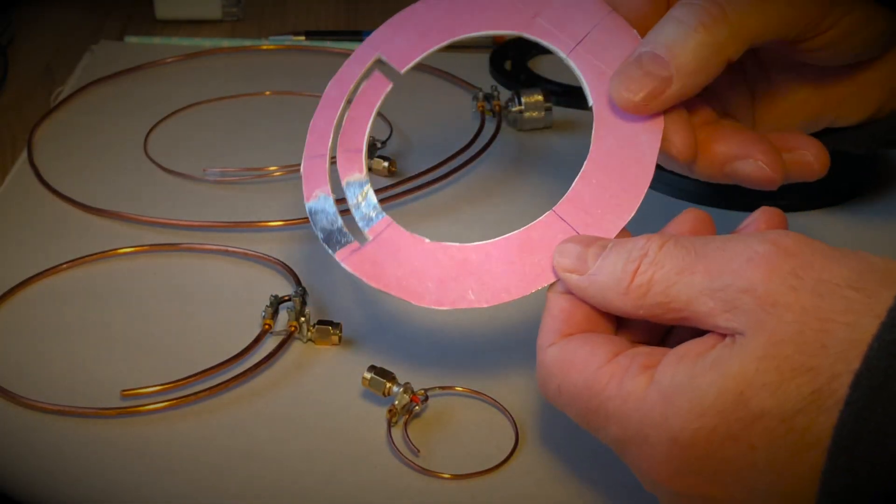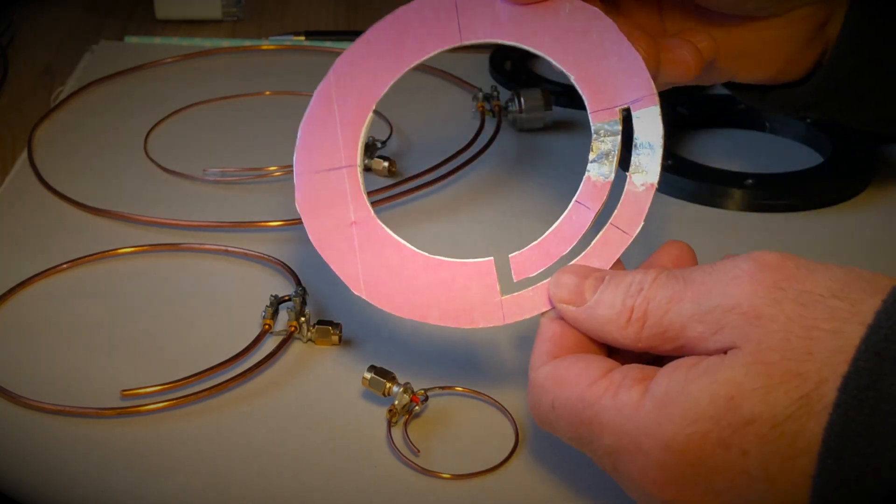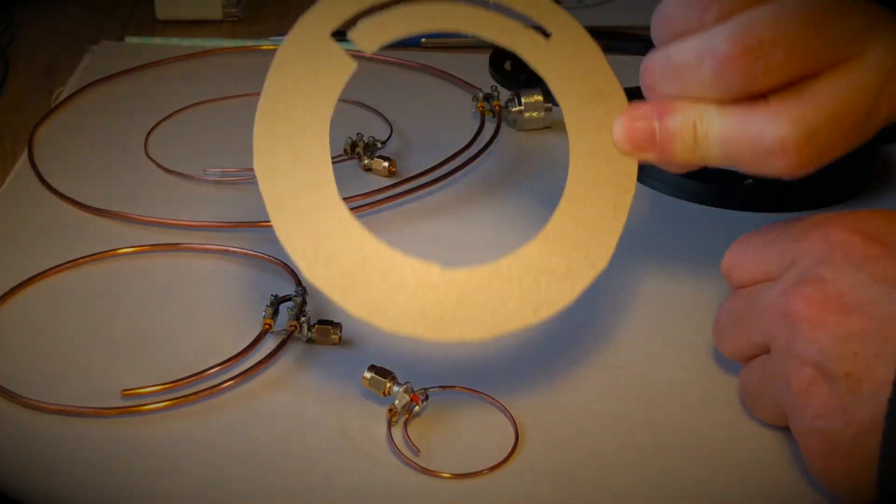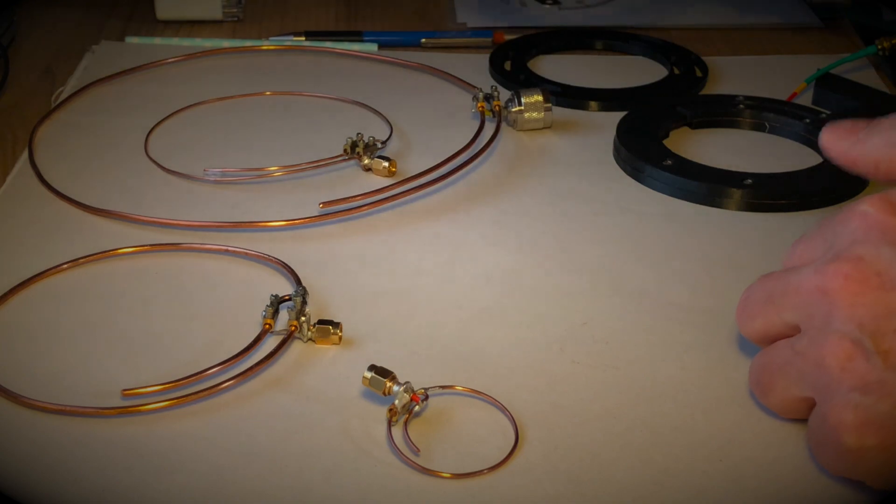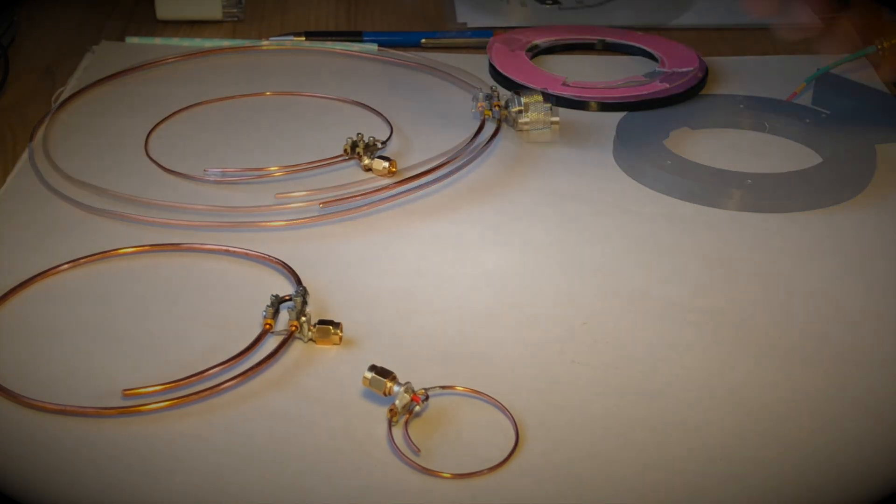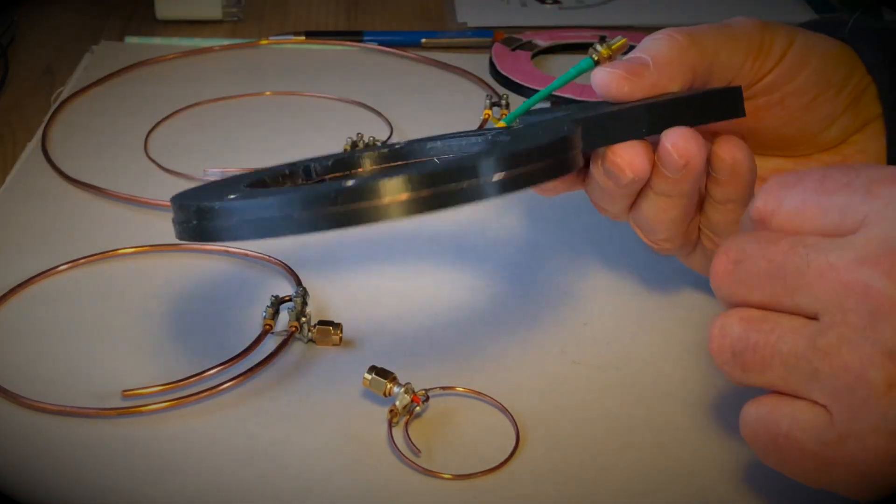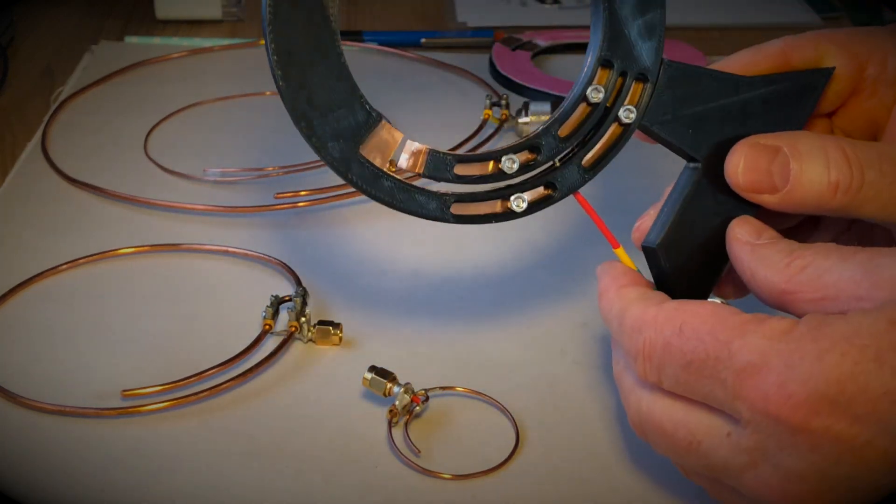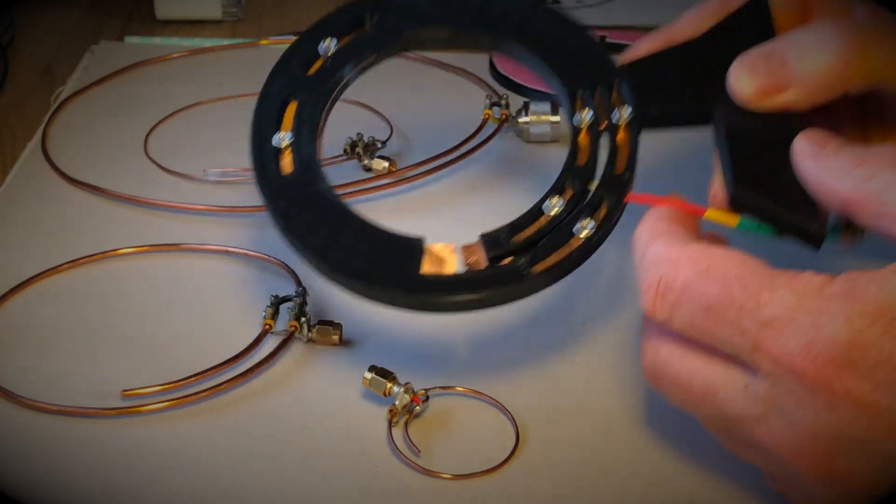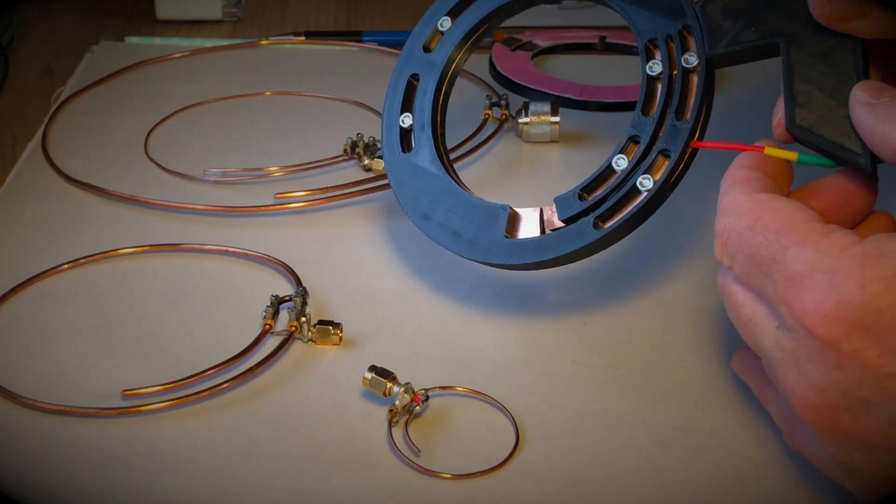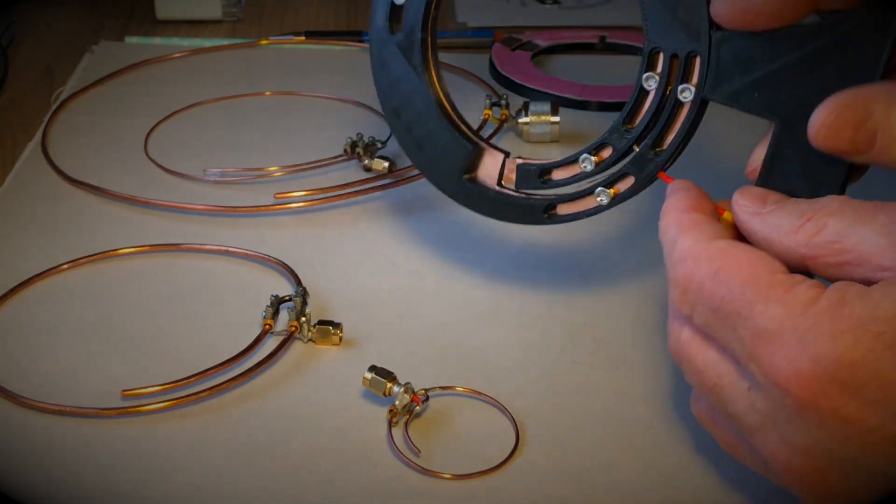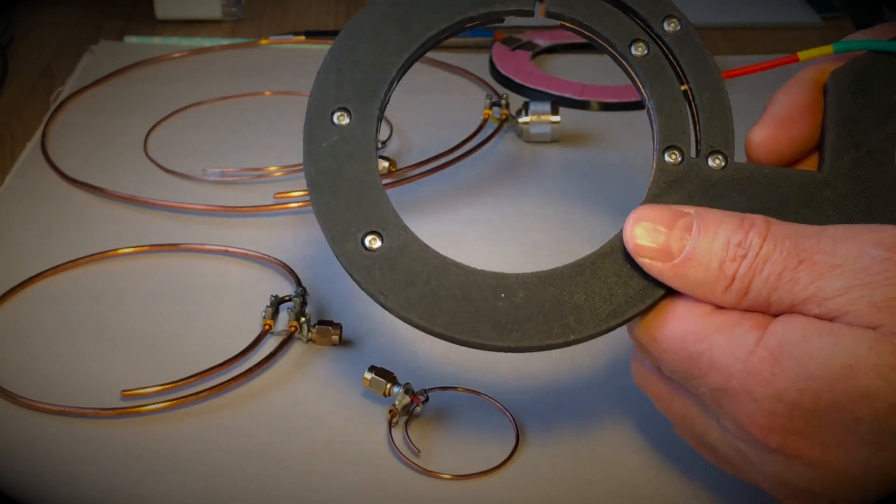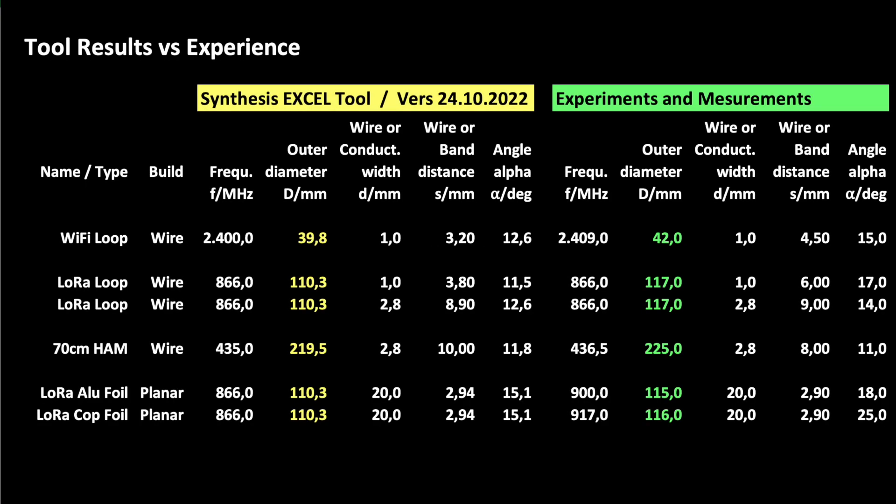We saw in the last videos that a planar structure has some advantages for the loop antenna, and of course I didn't give up on my goal of designing a PCB antenna. However, with a planar structure, you cannot change the diameter of the antenna for tuning. That's why we needed to improve the accuracy of the dimensioning tool in this respect. Let's take a quick look where the old Excel dimensioning tool still has weaknesses.